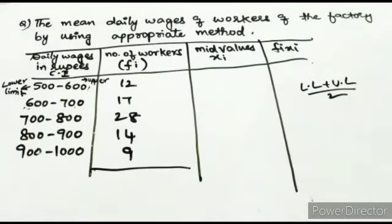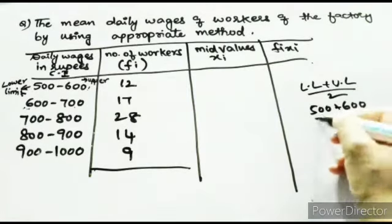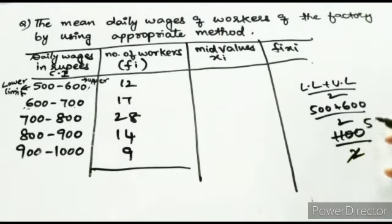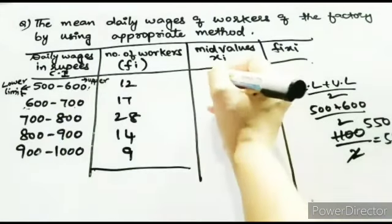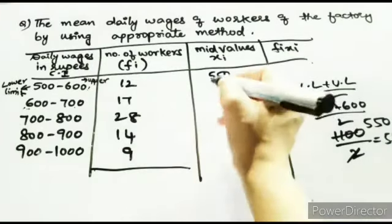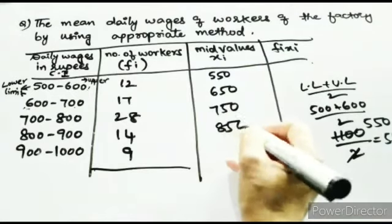So for the first class interval: (500 + 600) / 2 = 1100 / 2 = 550. That will be the mid value for 500 to 600. Using the same formula for the rest, the mid values are: 650, 750, 850, and 950.